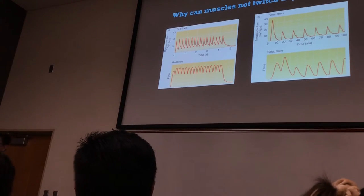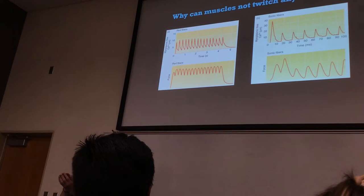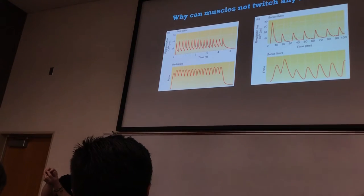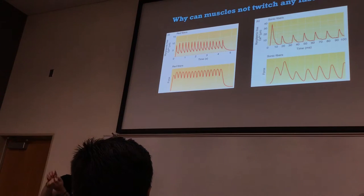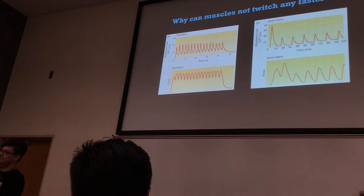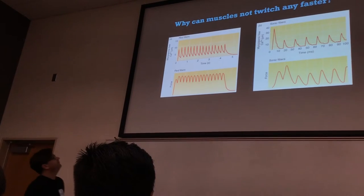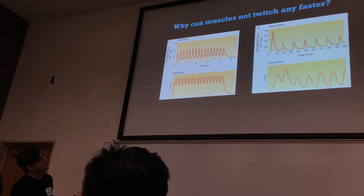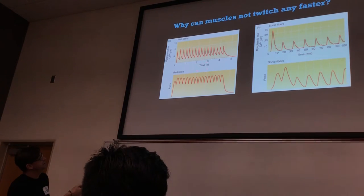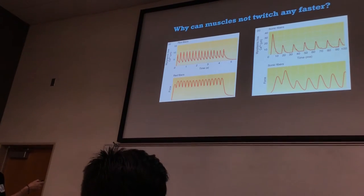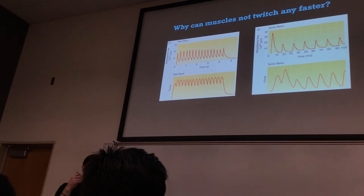Some fish feed by creating a negative pressure in their mouth by opening it very rapidly. By increasing volume, you decrease pressure, so they rapidly open their mouth and the prey gets sucked in. Those fish have really fast sonic fibers in the muscles in their jaws. Looking at how much free calcium there is in red fibers versus sonic fibers — note the x-axis difference: here we're looking at seconds, here at milliseconds. Calcium is really driving whether the muscle is going to contract or not.